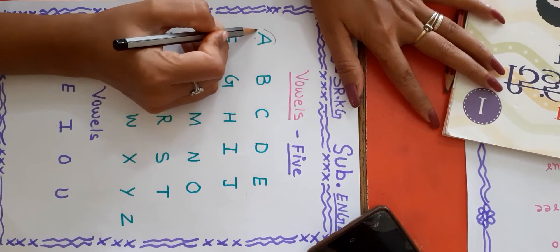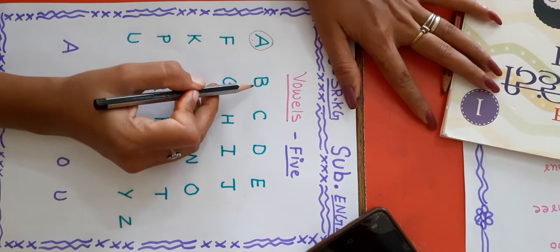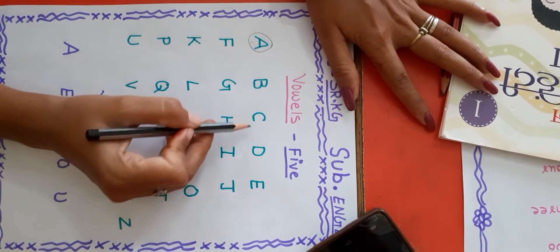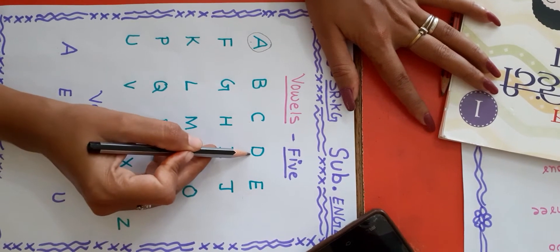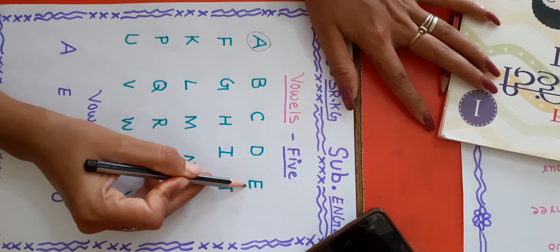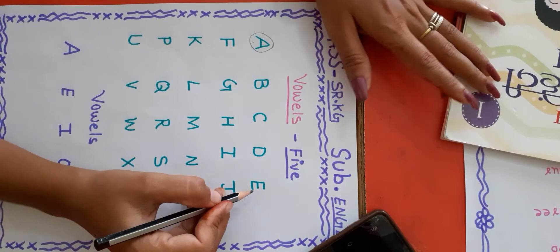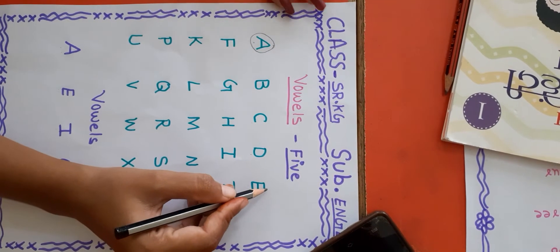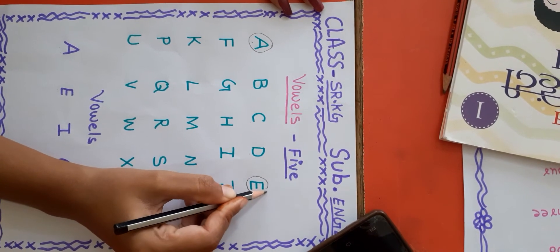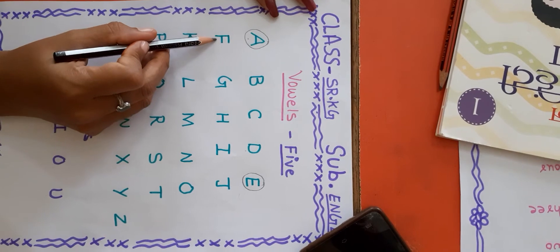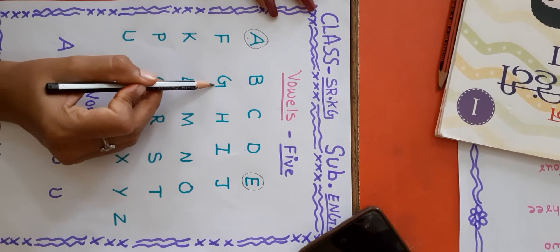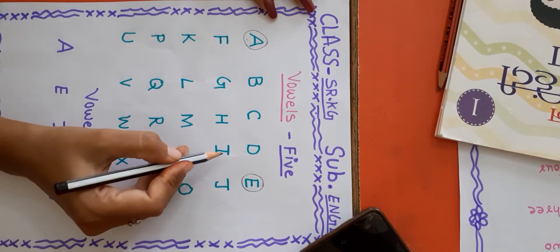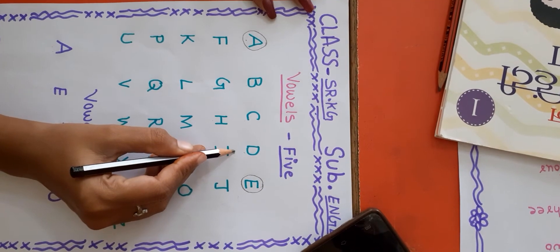B consonant, C D E, vowel. Now circle E. F G H I, vowels. Now circle.